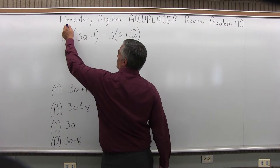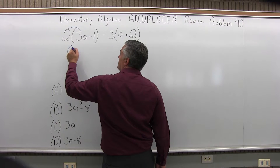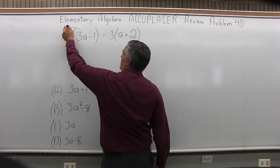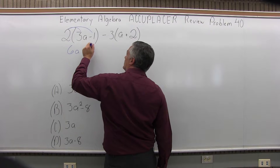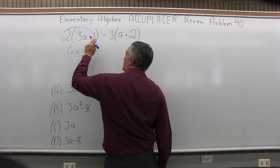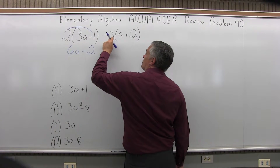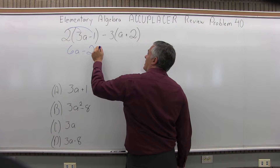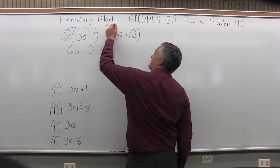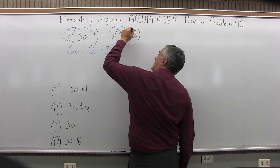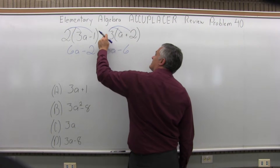So to start with, I'm going to have 2 times 3A is 6A, and then 2 times negative 1 is negative 2. Pay attention to the sign. Now I have negative 3 times A is minus 3A, and then negative 3 times 2 is negative 6.